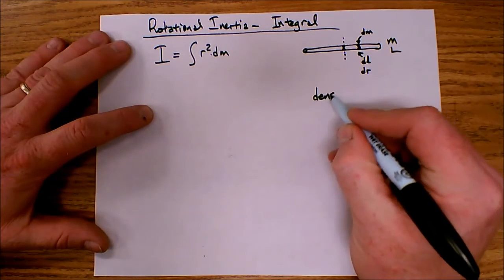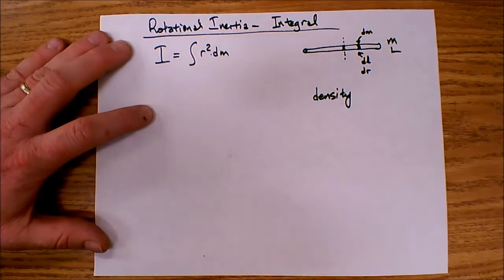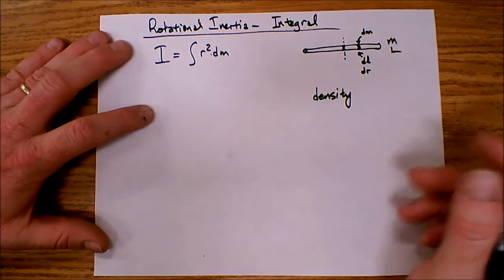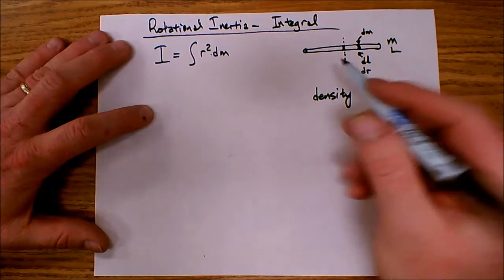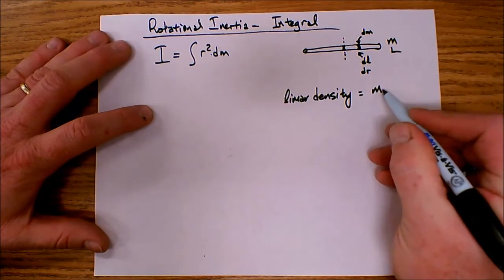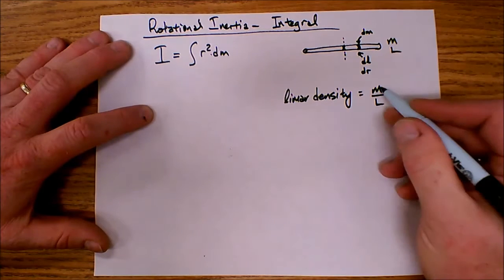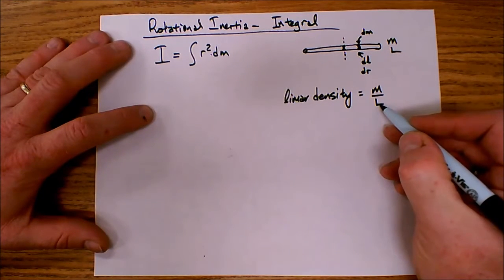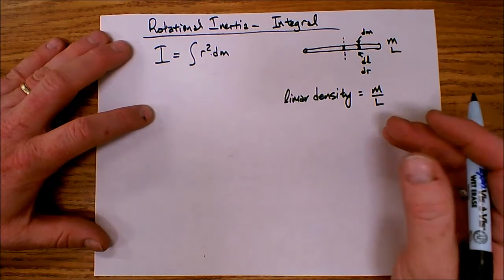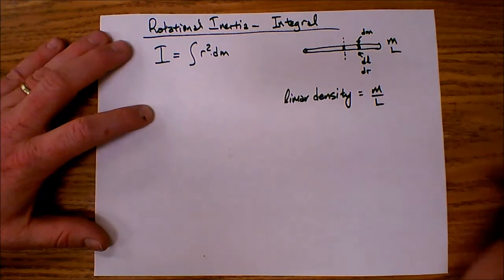And we do that by the fact that this is a uniform density. Uniform density means that no matter what size piece I take, the ratio of mass divided by length stays the same. So the total mass of the rod divided by the total length of the rod will give you the density of the rod. And that density will be the same no matter what size sample you're looking at.